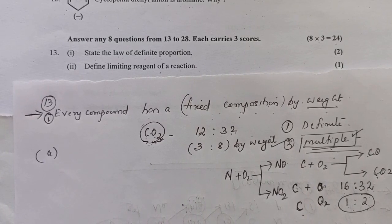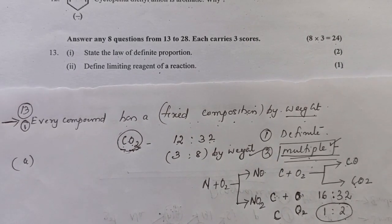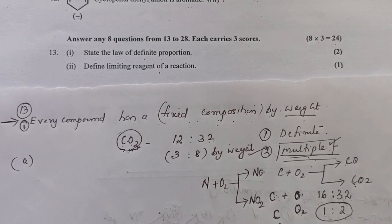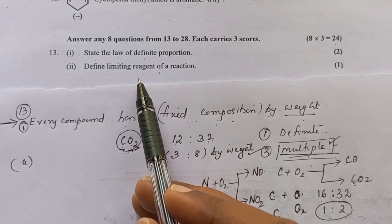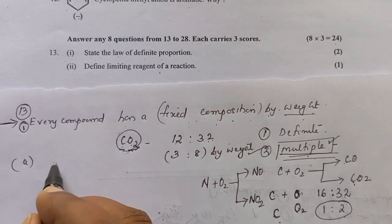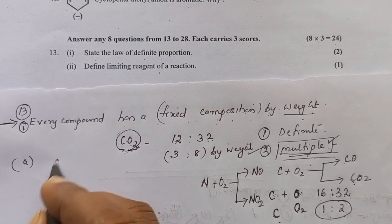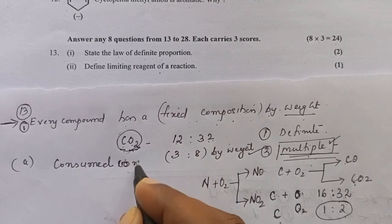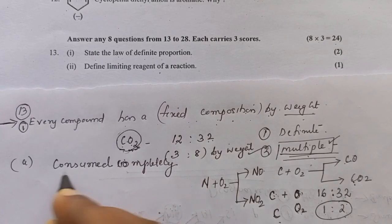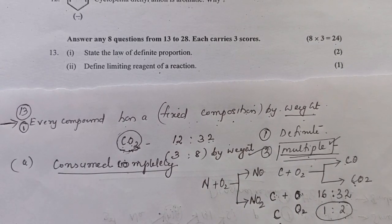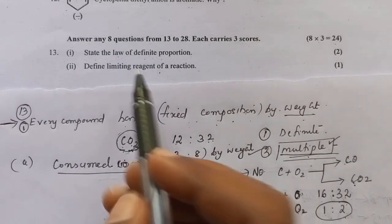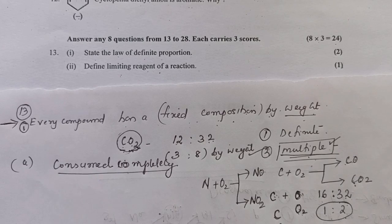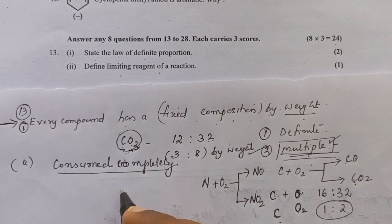The second part is limiting reagent of a reaction. The simple question is: what is limiting reagent? The limiting reagent is the reactant that is completely consumed in a reaction — the reactant that is completely used up in a reaction. That is the first definition.